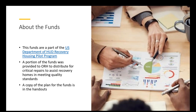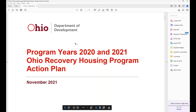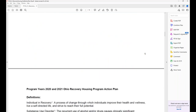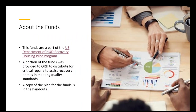These funds are part of the U.S. Department of HUD Recovery Housing Pilot Program. The handout in your section is the Ohio Recovery Housing Program Action Plan for Department of Development program years 2020 and 2021 — those are the funds available now. These are federal funds from the Department of Housing and Urban Development. A portion was provided to Ohio Recovery Housing to distribute for critical repairs to assist recovery homes in meeting quality standards.